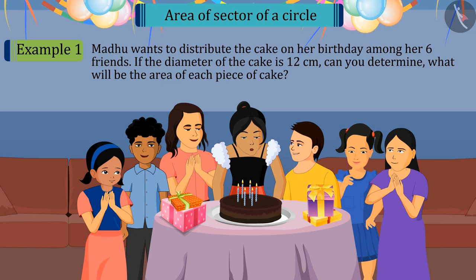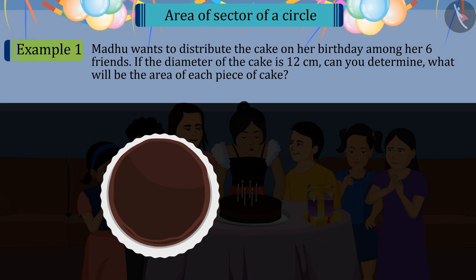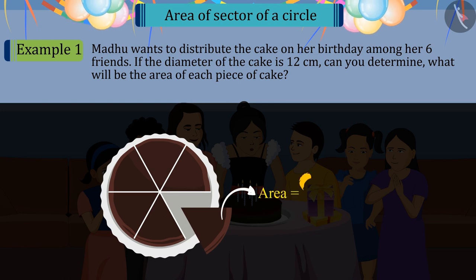Madhu wants to distribute the cake on her birthday among her 6 friends. If the diameter of the cake is 12 cm, can you determine what will be the area of each piece of cake? Come, let's try to solve this question.